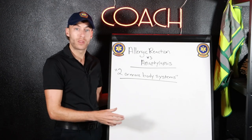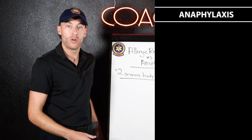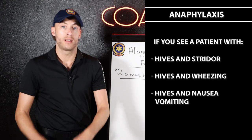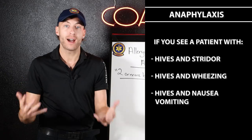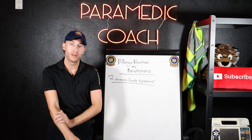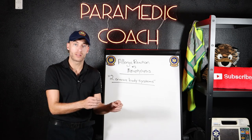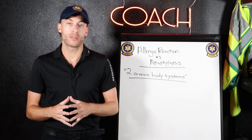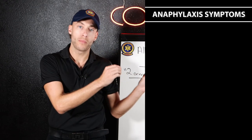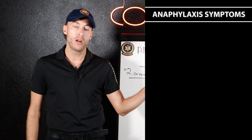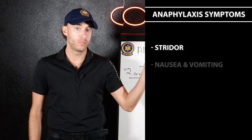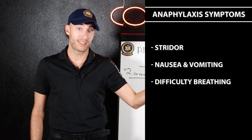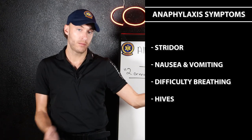With anaphylaxis, if we see a patient with hives and stridor, hives and wheezing, or hives and nausea/vomiting — that's anaphylaxis. The integumentary system is one body system. The other body systems: GI — nausea, vomiting; respiratory — wheezing, stridor. The big signs and symptoms to watch for on the exam for anaphylaxis include stridor, nausea/vomiting, difficulty breathing, hives, and urticaria.